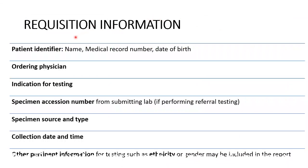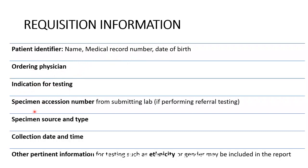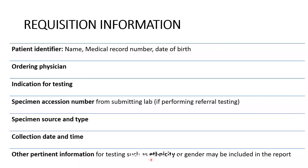The requisition information includes patient identifiers like name, medical record number, and date of birth; ordering physician's name; indication for testing; specimen accession number; specimen source and type; collection date and time; and other pertinent information for testing.